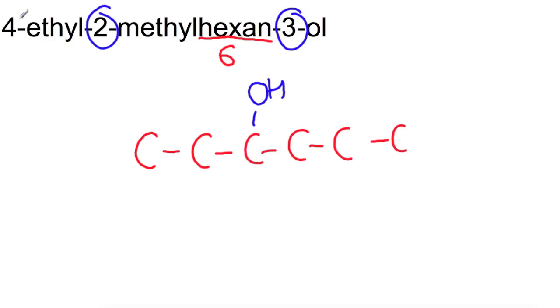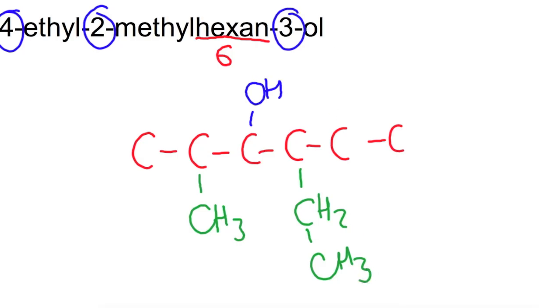On the third carbon which we're going to take as being this one here we have an OH group. On the second carbon you have a methyl and on the fourth carbon you have an ethyl group. So if this is the third carbon this one is our second. So there is our methyl group and then on the fourth carbon we have an ethyl group. So CH2 CH3 and then just go around and fill in the rest of the hydrogens. Making sure that everything has four bonds.